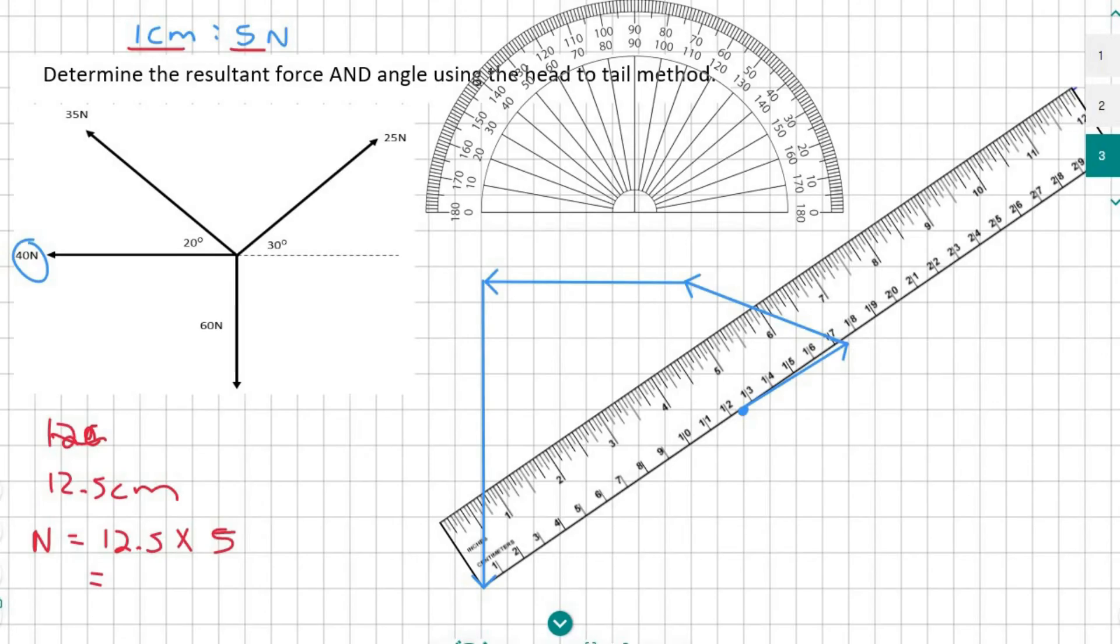And that's going to give us 62.5 newtons. You might not get the exact same answer because with a scale drawing you can have a little bit of inaccuracy. Maybe mine even has a little bit of inaccuracy. As long as you're getting fairly close that is good.